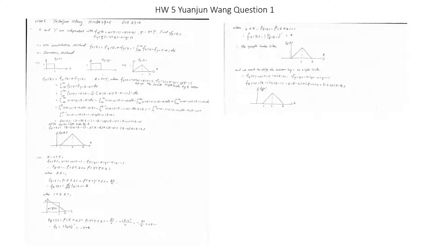When z is greater than 2, Fz(z) = 1, so fz(z) = 0. The graph looks like a triangle shape. We then shift the answer to the right by 1, giving fz(z) = (z-1)·u(z-1) - 2(z-2)·u(z-2) + (z-3)·u(z-3).